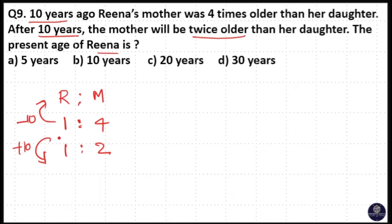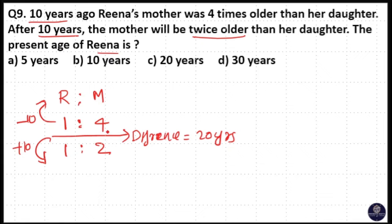The difference between 10 years ago and 10 years after is equal to 20 years. But here you can see the difference between 4 and 2 is 2 units, and the difference between 1 and 1 is 0 units. So the differences are not constant. So when you have ratios like this, to make these differences equal, take the difference between 1 and 4, that is 3 units, then multiply it with the next ratio.